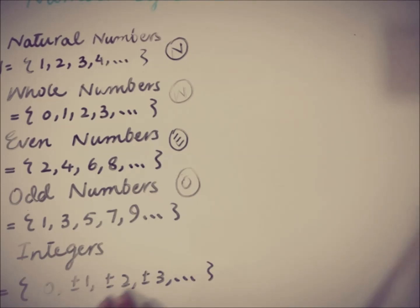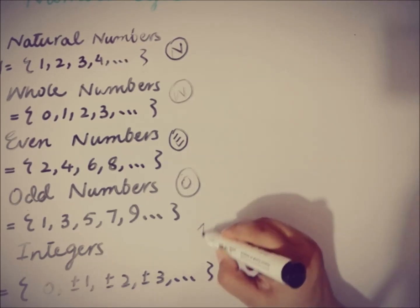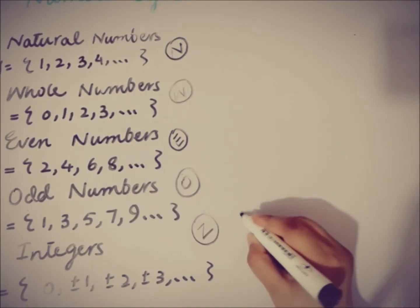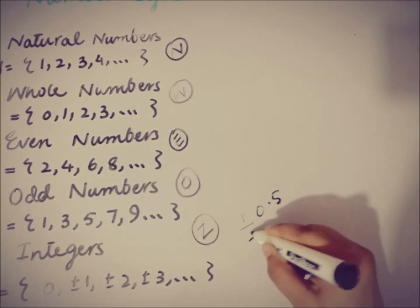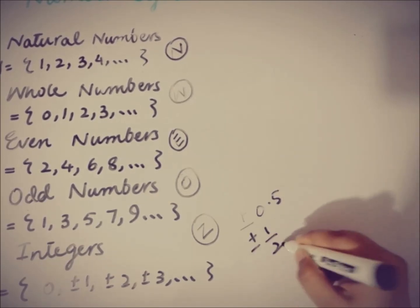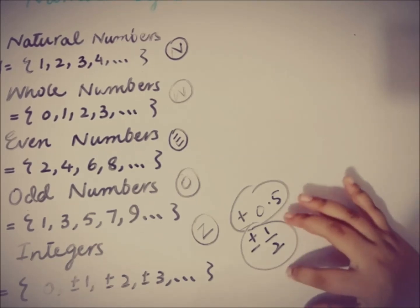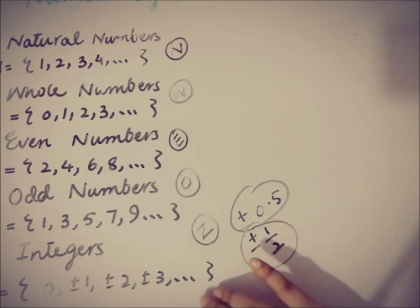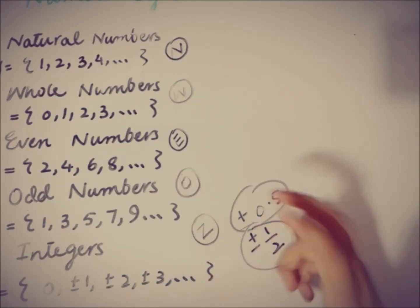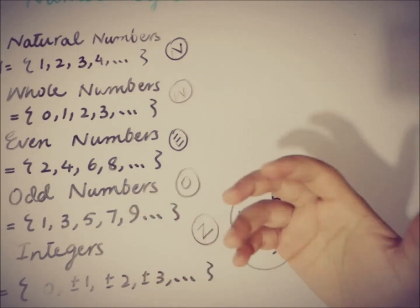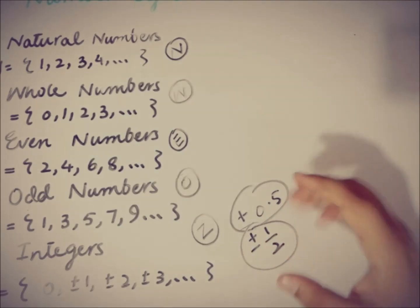The integers include positive and negative integral values: 0, positive and negative 1, positive and negative 2, positive and negative 3, and so on, represented by the letter Z. You have to note that in the integers we do not mention decimal values or fractions — only integral values. So integers contain only integral values: zero, positive and negative 1, positive and negative 2, positive and negative 3, and so on.